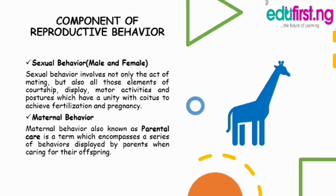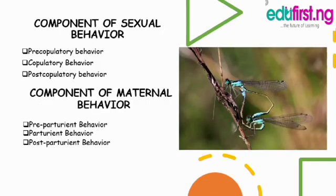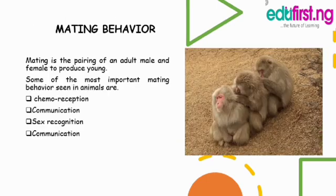Components of sexual behavior: number one, pre-copulatory behavior; number two, copulatory behavior; number three, post-copulatory behavior. Components of maternal behavior: pre-parturient behavior, parturient behavior, and post-parturient behavior. This is followed by mating behavior.